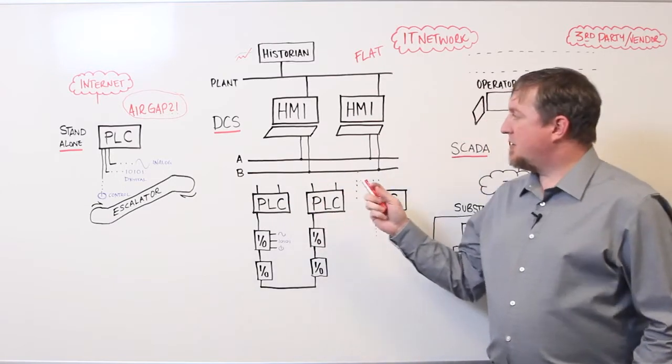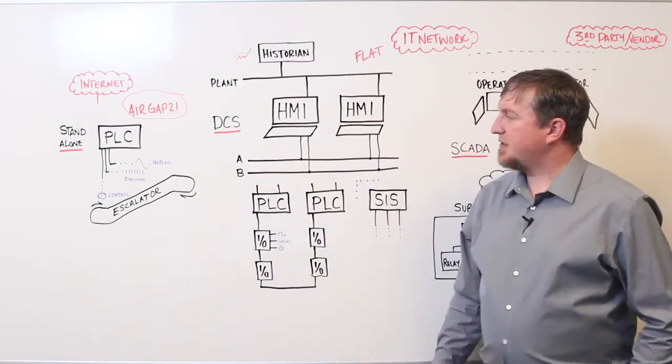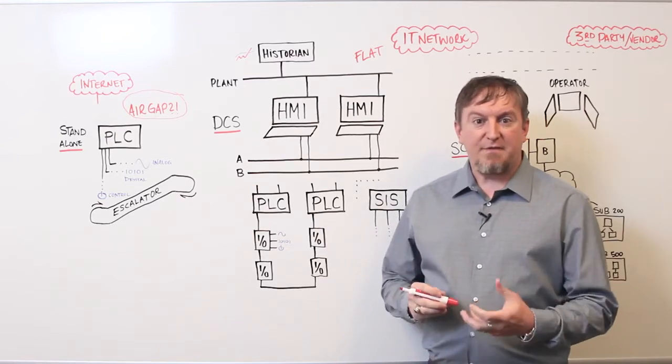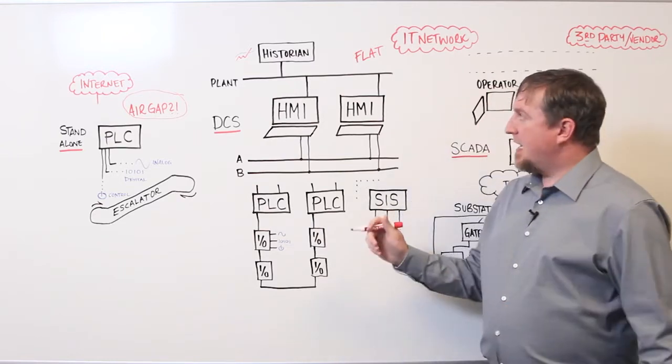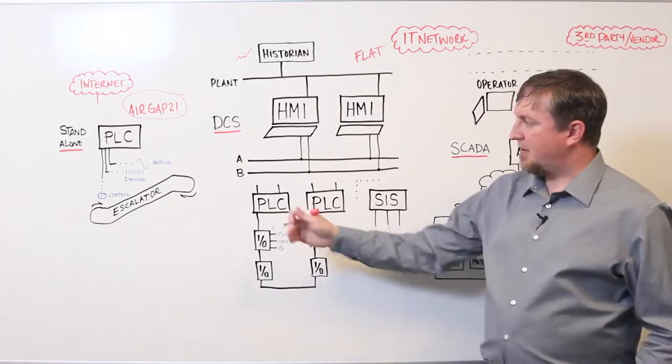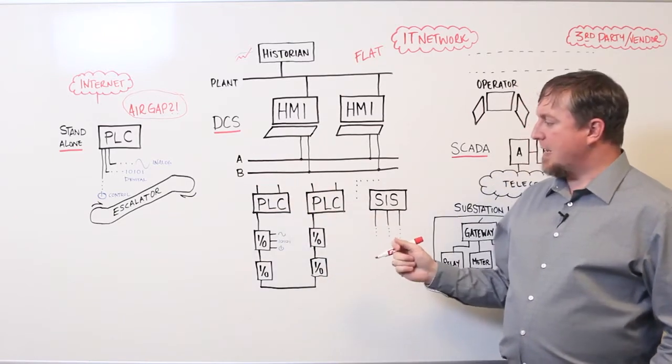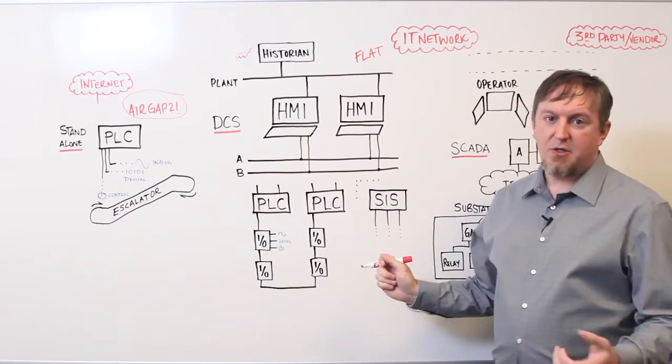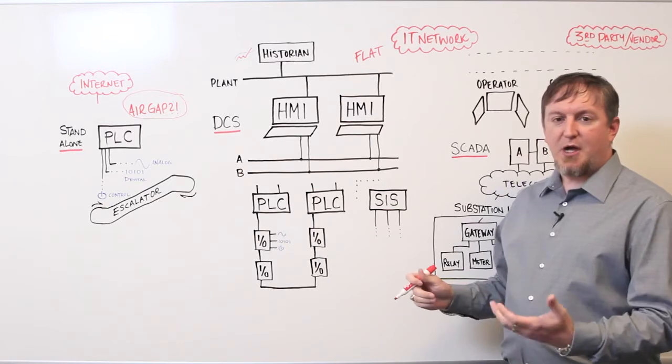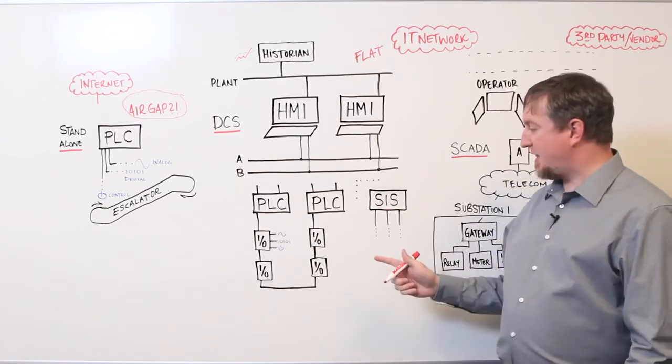The second system is a distributed control system, DCS, and you find these at power plants and refineries and manufacturing facilities. They're a little bit more complicated. They have many different components, like PLCs that control different things, like a turbine or a digester or some kind of pressure vessel.